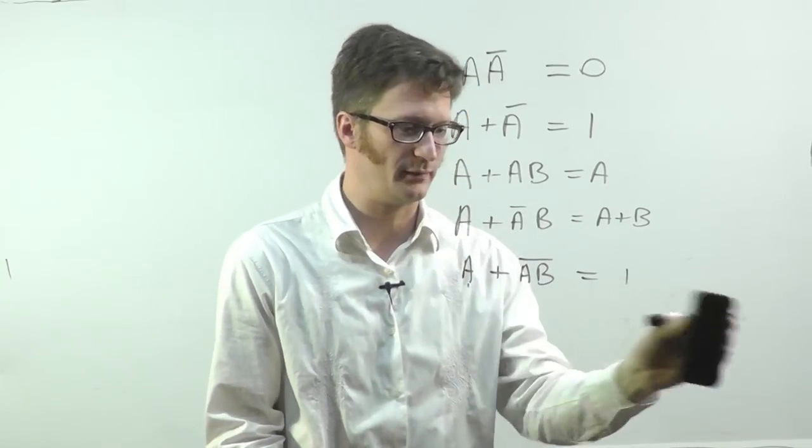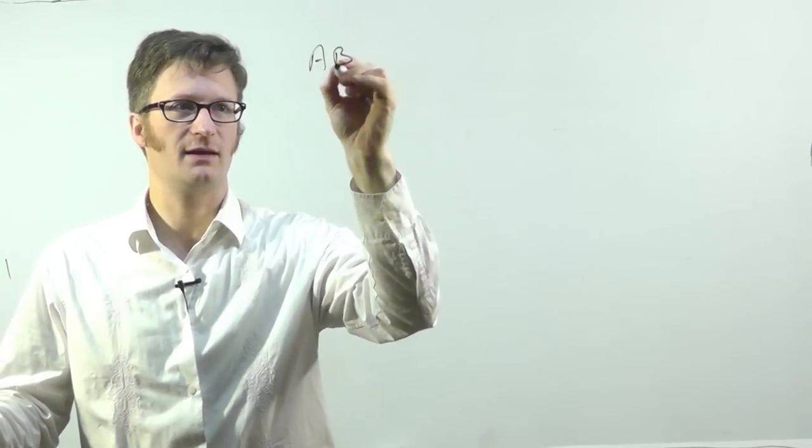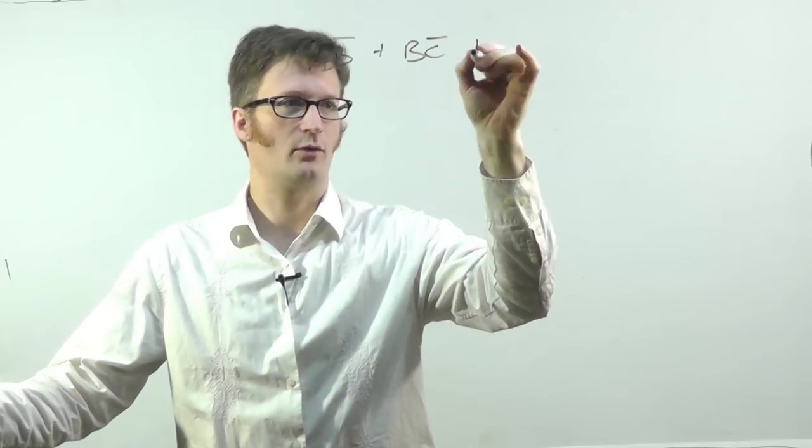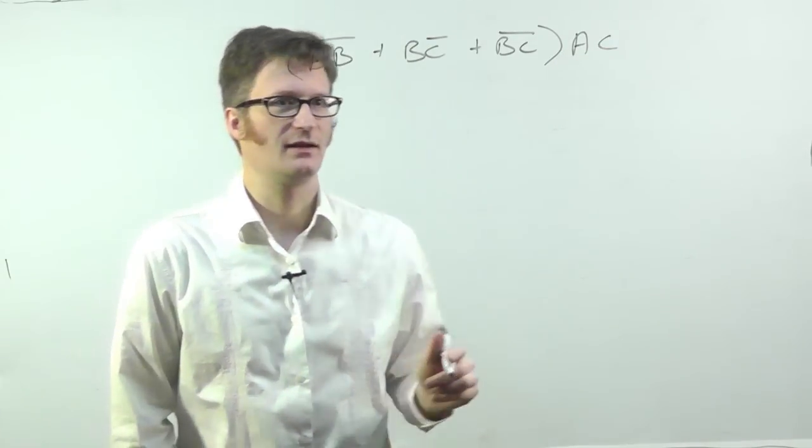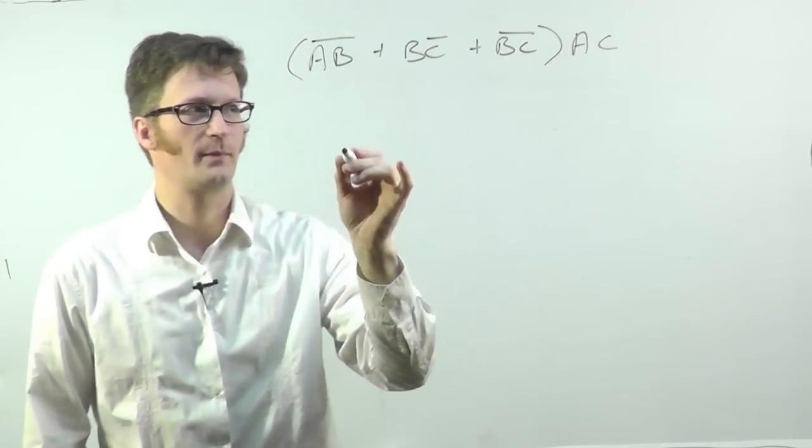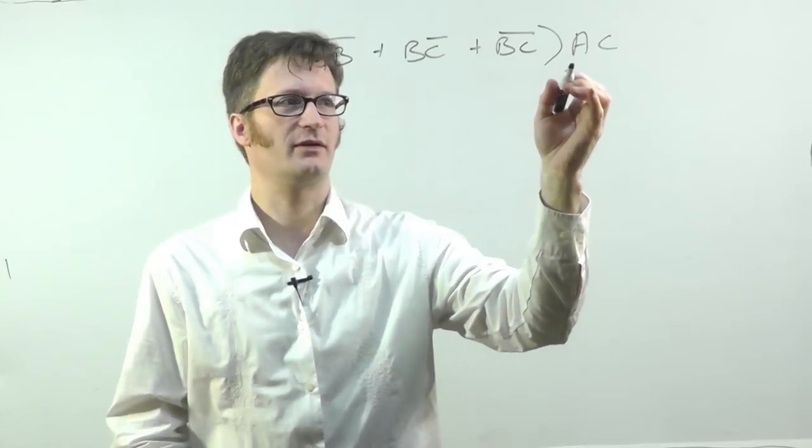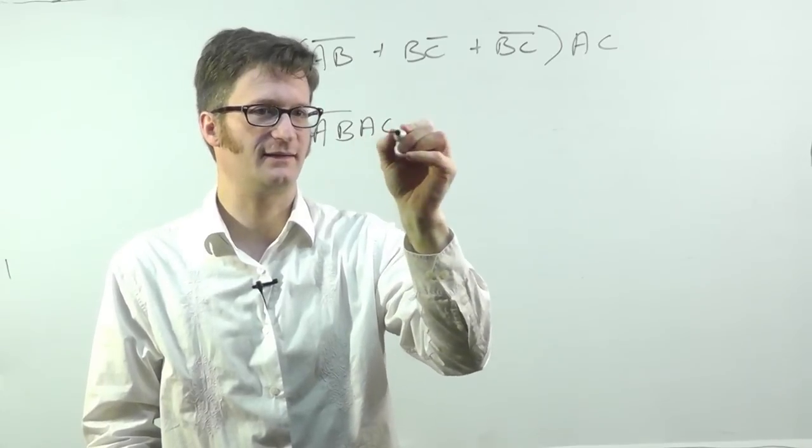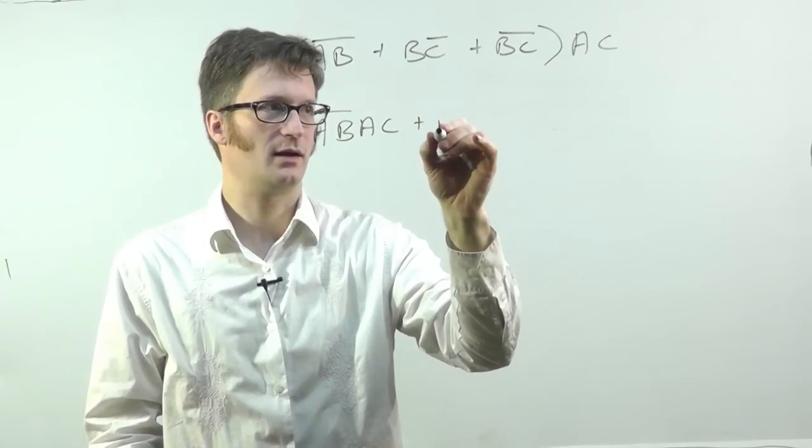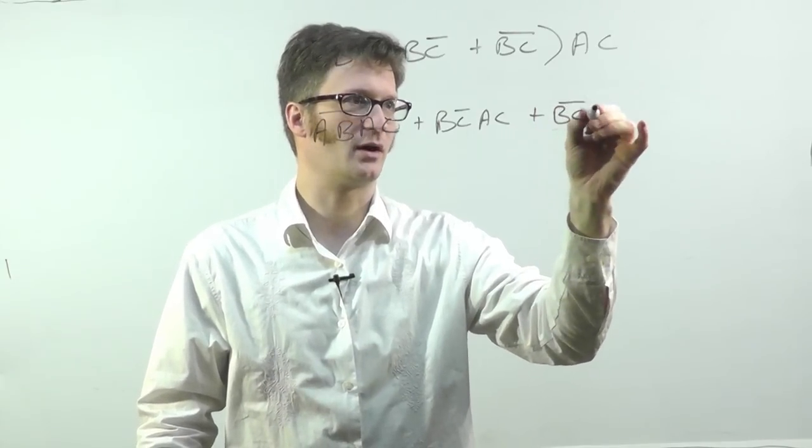Okay, let's do a few simplifications here. The first of them that I'm going to do is A B bar or B C bar or B C bar all times A C. All right, so the first thing I'm going to do, and this isn't necessarily using all the rules that I just showed, it'll use some of them, but I'm just showing you the process. So the first thing I'm going to do is I'm going to multiply all of this out. So it becomes A B bar A C or B C bar A C or B C bar A C.